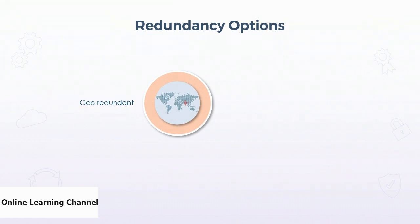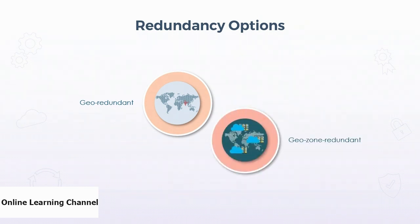Geo-redundant data storage replicates the data three times within the same data center on different storage in the primary region. Then it replicates the data out to a secondary region. Geo-zone redundant storage takes this concept a step further, replicating the data across three availability zones — individual, independent data centers in the primary region — before replicating it out to a secondary region.